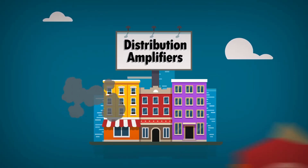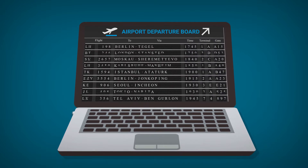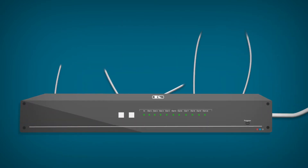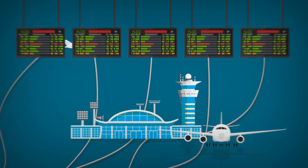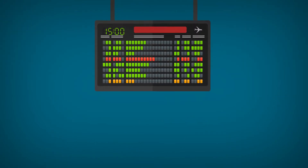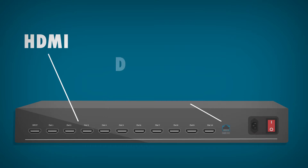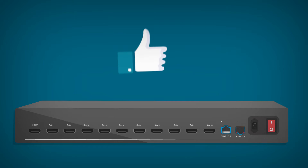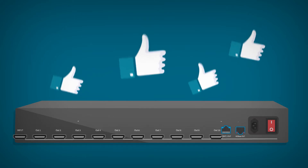What is a distribution amplifier? A distribution amplifier can split a single input signal into multiple outputs. The input signals are duplicated and transmitted. Some distribution amplifiers support signal conversion and can convert HDMI, DGCAT, and HDBaseT signal formats. Distribution amplifiers are a good choice when using multiple displays.